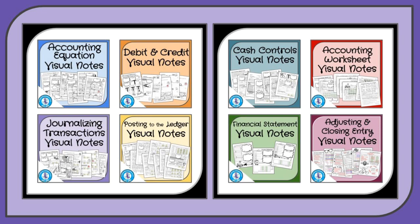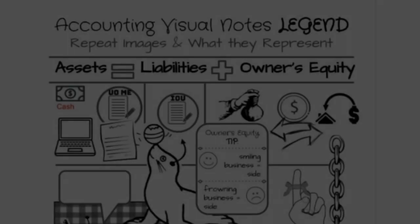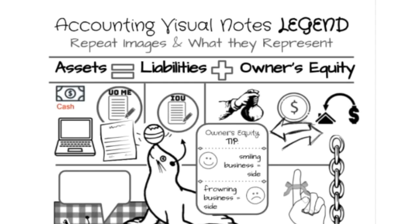So let's jump into the accounting equation. It is written as assets equal liabilities plus owner's equity. And underneath each section, we have images that represent different accounts that you would find there.